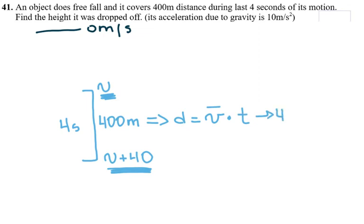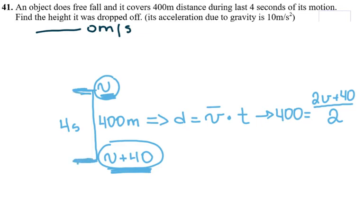And in our case, the distance is 400. Average velocity, I have V to start with and this one to end with. So if I add them together, I will have 2V plus 40. Divide by 2. So that's average velocity between this velocity and this velocity, the top one and the bottom one. And the time is 4 seconds that took to travel this distance.